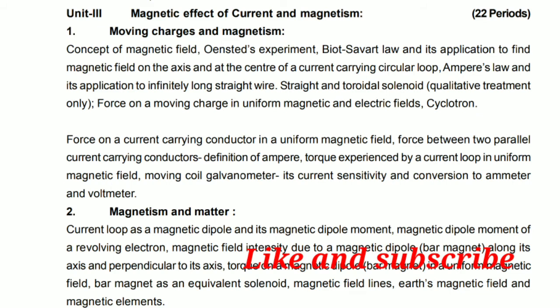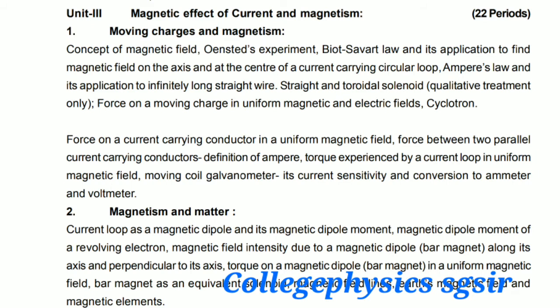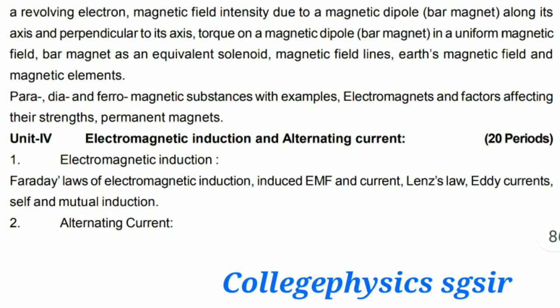In the second chapter, we discuss current loop as a magnetic dipole and its magnetic dipole moment, magnetic dipole moment of a revolving electron, magnetic field intensity due to a magnetic dipole along its axis and perpendicular to its axis, Earth's magnetic field and magnetic elements, and paramagnetic, diamagnetic substances with examples, and permanent magnets.